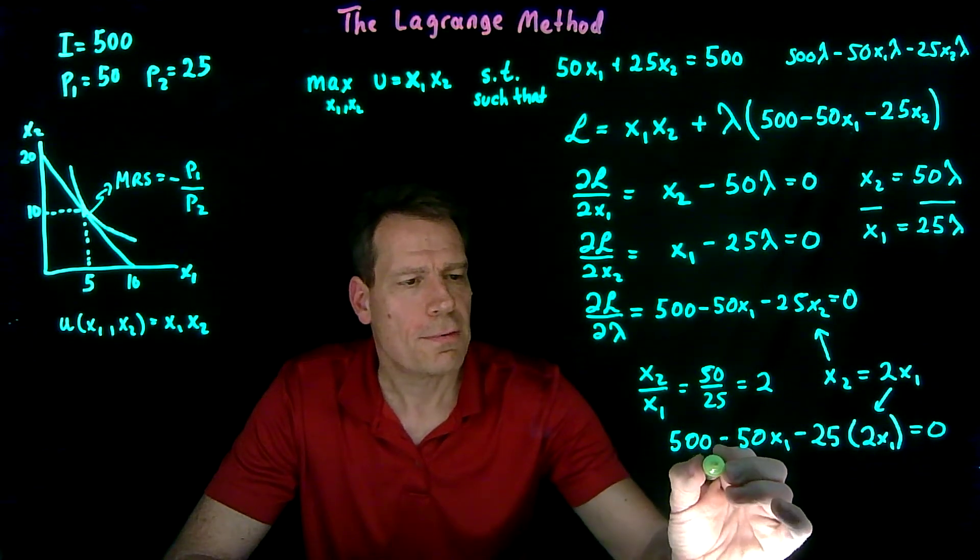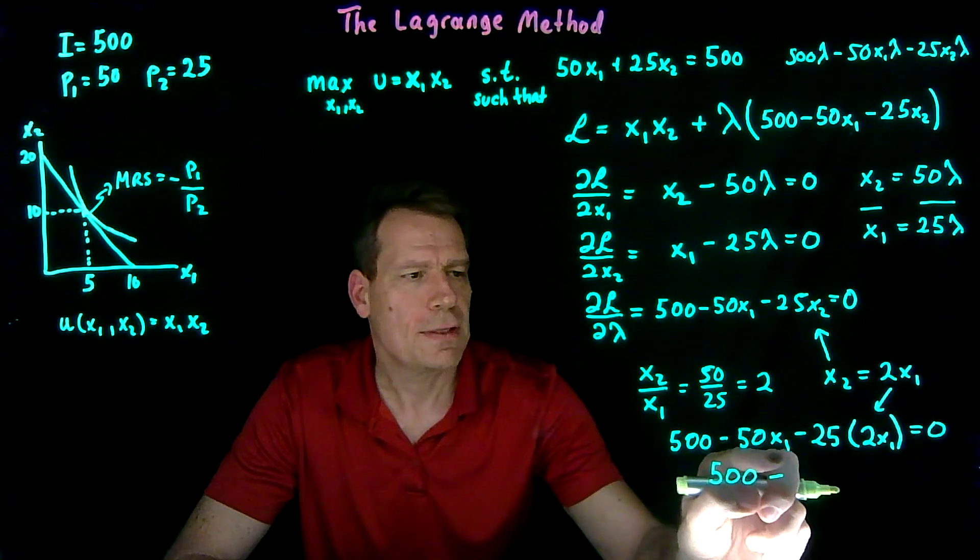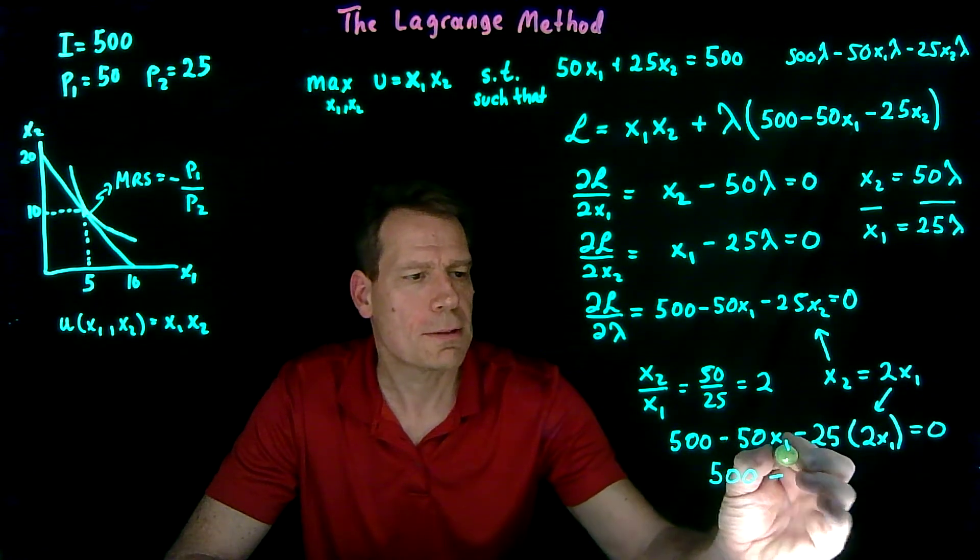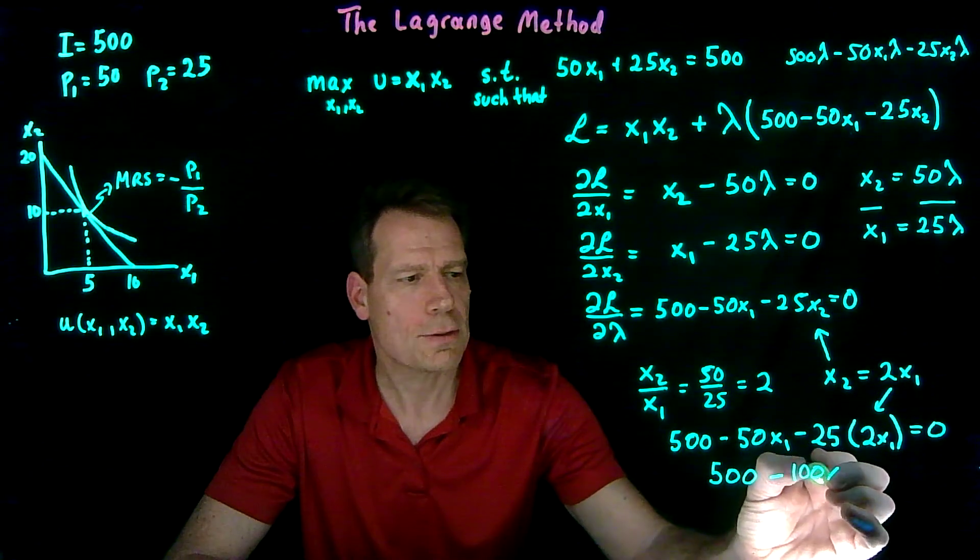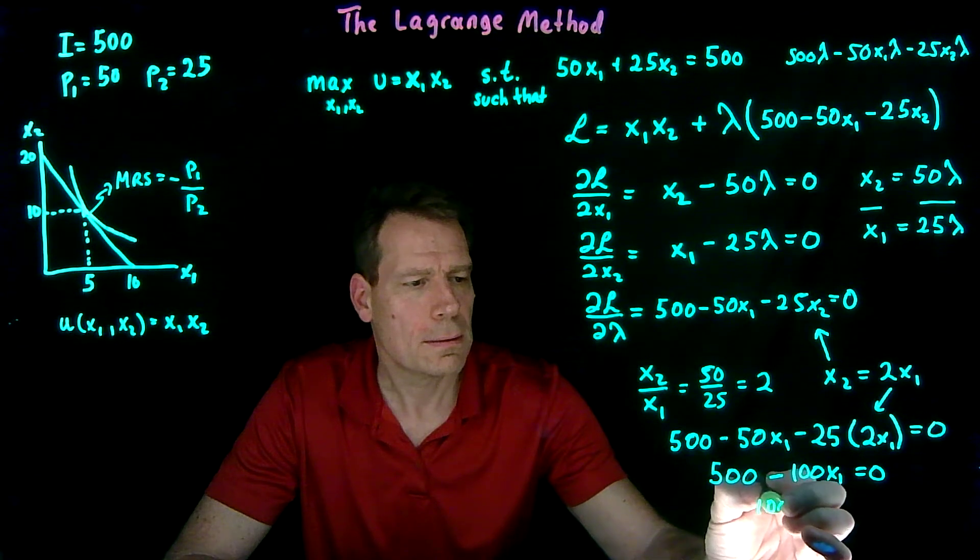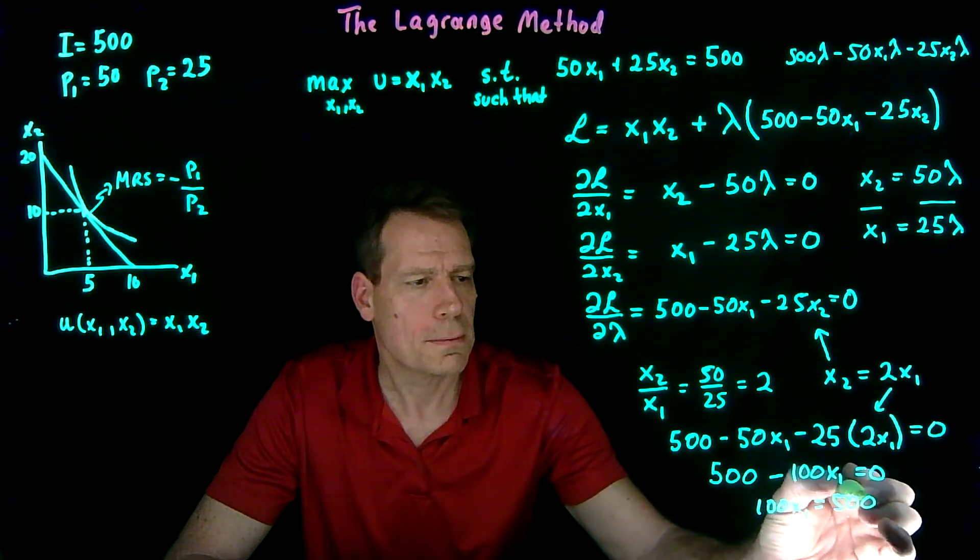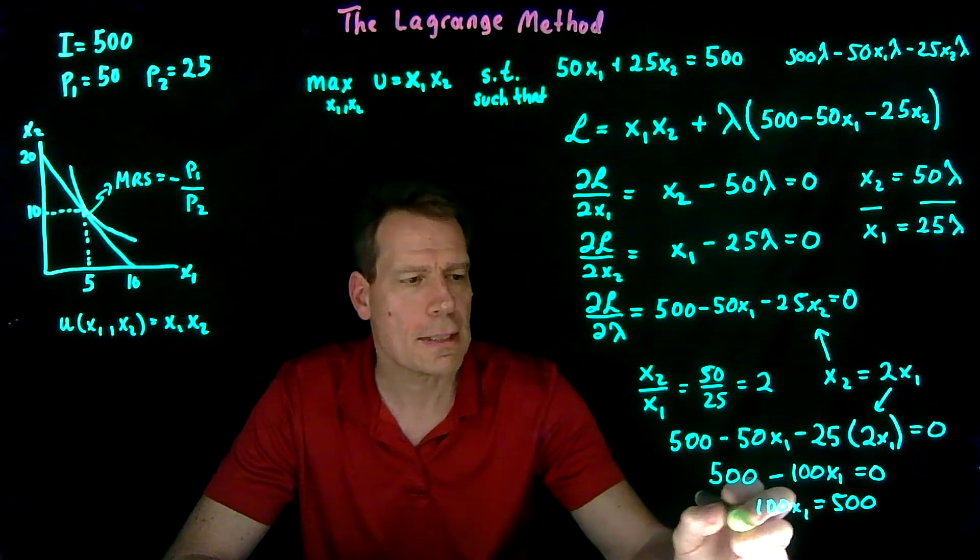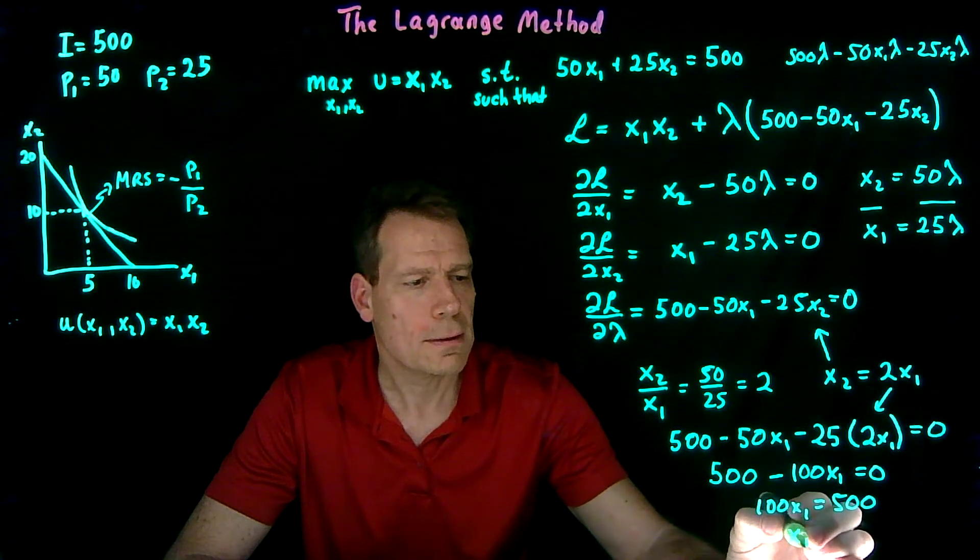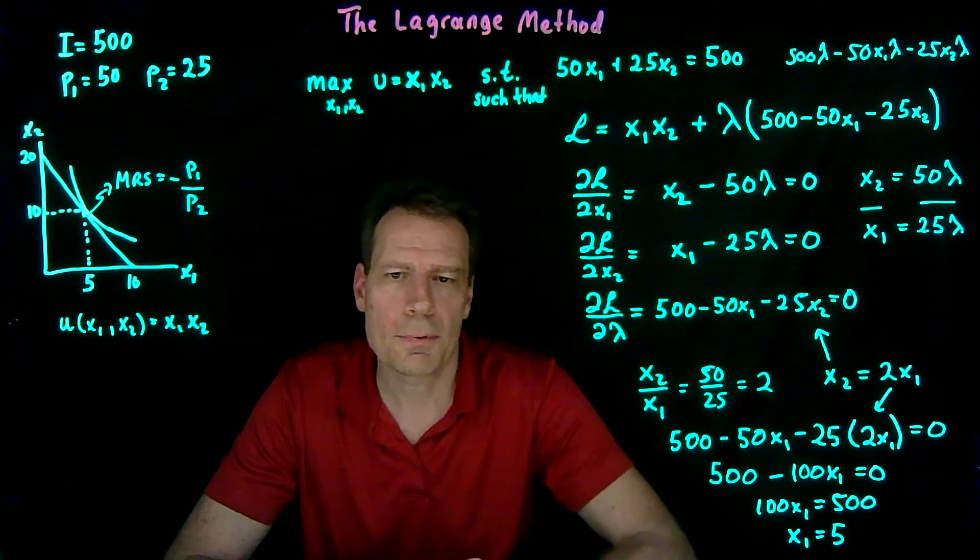And that's equal to 0. So in other words, 500 minus 50x1 minus 50x1 is minus 100x1 is equal to 0. Well, 100x1 is equal to 500. Just taking that term to the other side, which means x1 is equal to 5. Exactly what we got with our previous method.